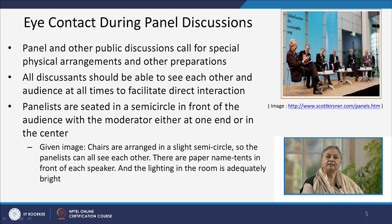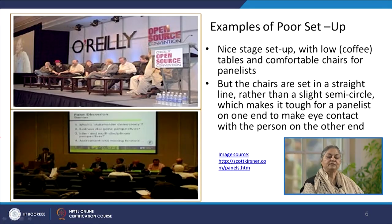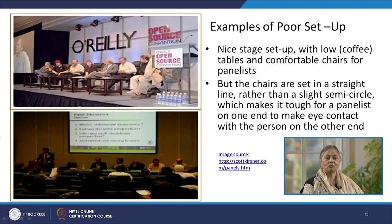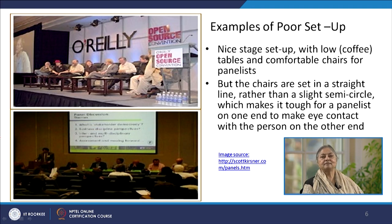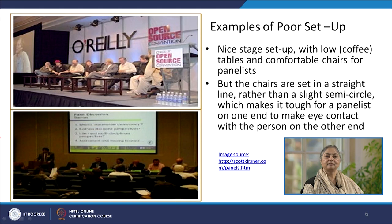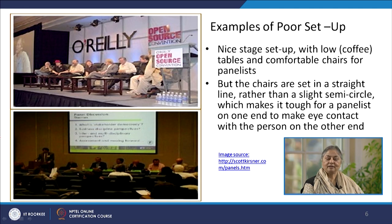In comparison to seating arrangements where positive eye contact is encouraged, we can also look at certain images where eye contact is not fully possible. In this image, there is a nice stage setting, comfortable chairs, and low tables so that the view with the audience is not obstructed. But the chairs have been put in a straight line so that the speakers are unable to have any eye contact with each other while participating. The level of participation as well as the enthusiasm of the speakers would automatically be adversely affected in this situation.